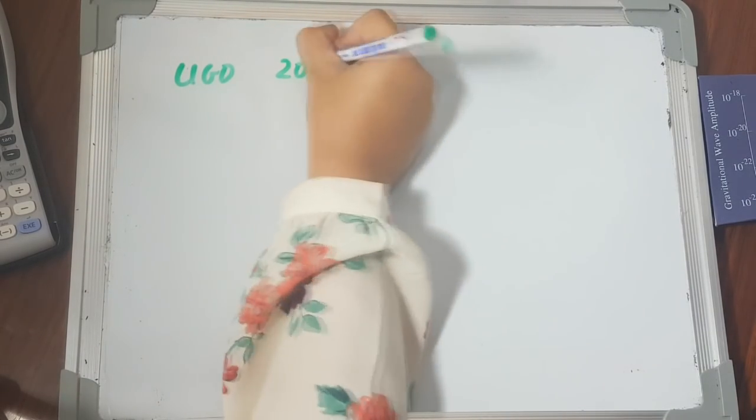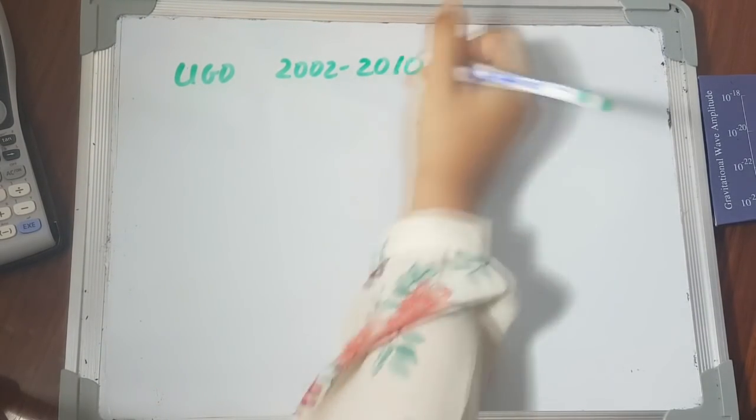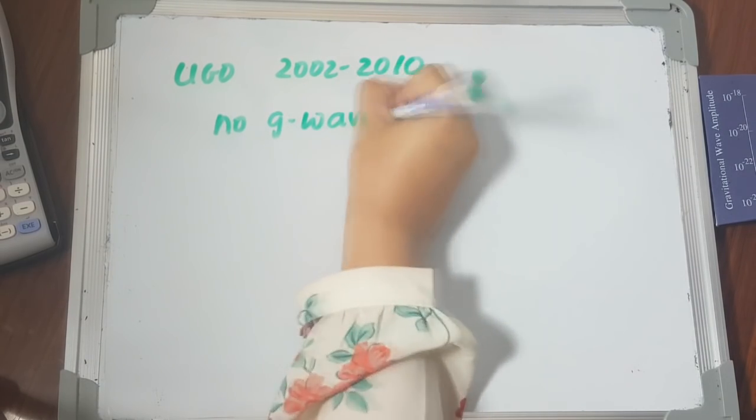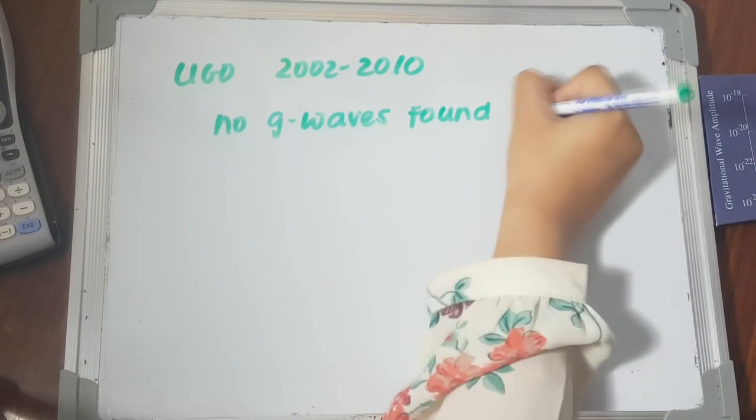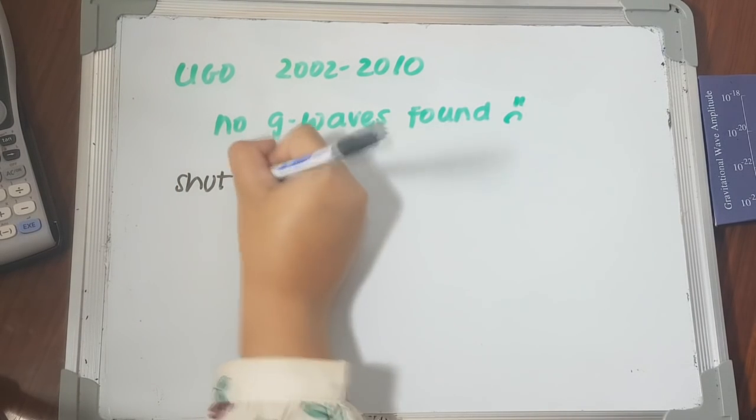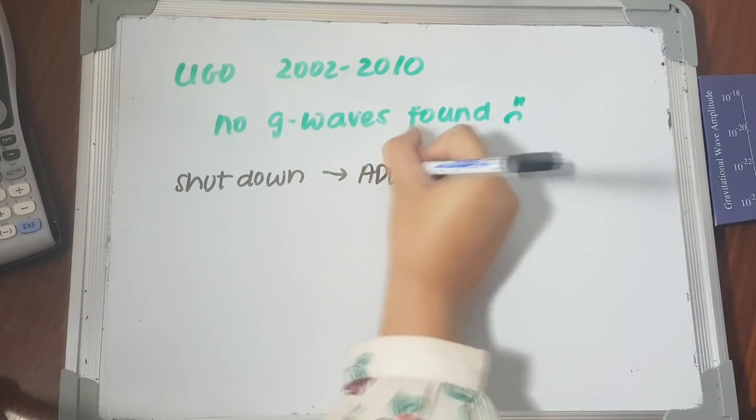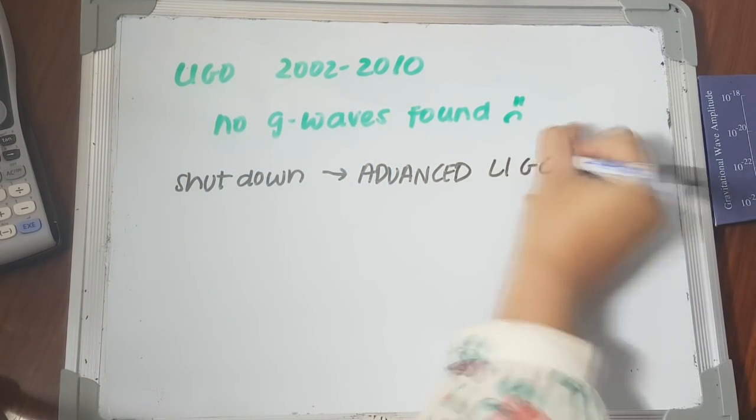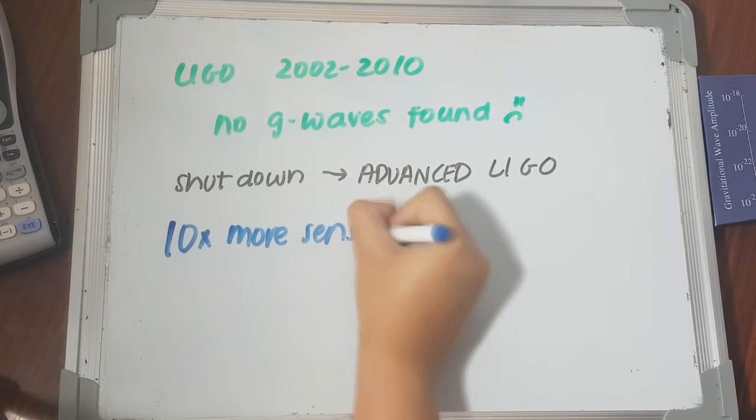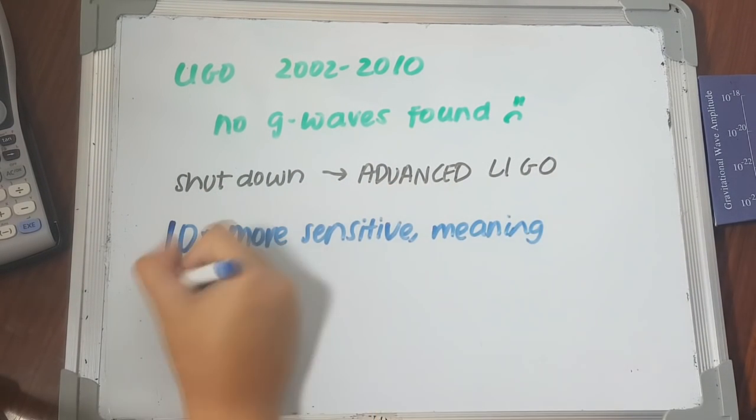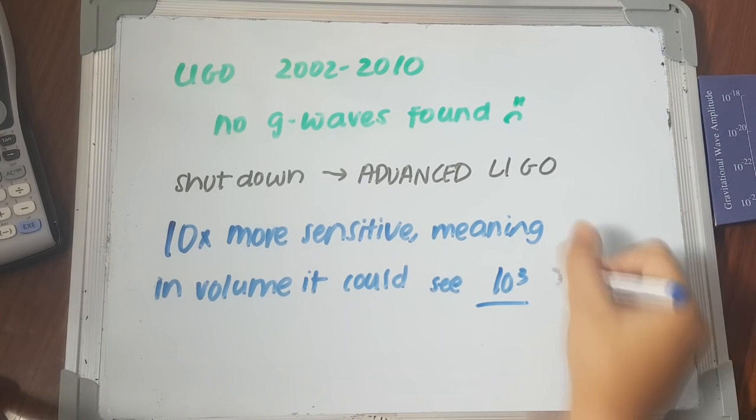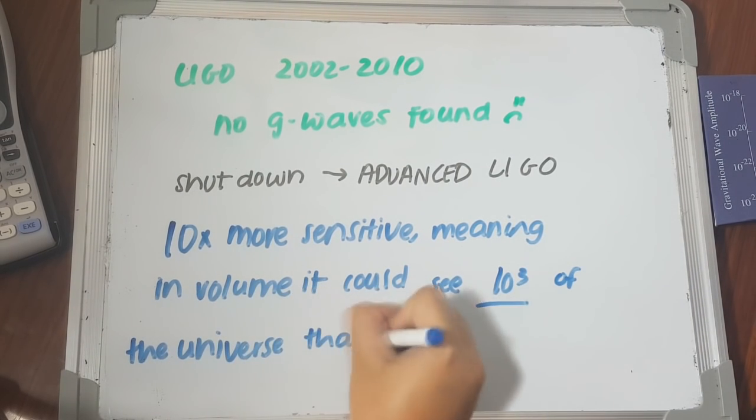So that is what LIGO did when it ran from 2002 to 2010. However, during that eight year period, only a couple of zero gravitational waves were found. So LIGO shut down, only to be reopened in 2015 as Advanced LIGO, which was ten times more sensitive than the original LIGO. In terms of volume, it could see ten cubed more volume than it could before.